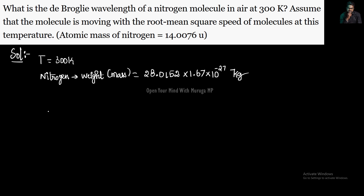The mean kinetic energy of the molecule: since the molecule is moving with root mean square speed, kinetic energy is (3/2)kT. So (1/2)mv² = (3/2)kT. The 2s cancel, giving v² = 3kT/m.